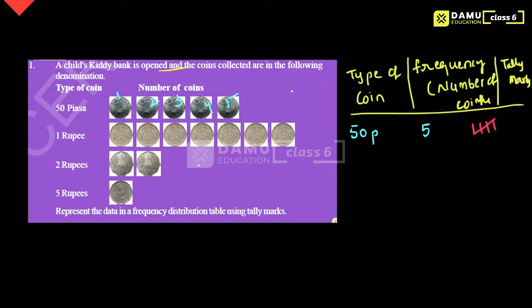Then next one: 1 rupee. How many tally marks are we going to write for 1 rupee? Counting through: 1, 2, 3, 4, 5, 6, 7. So we have 5 marks and then 2 more. For every group of 5, we strike through. What is the frequency here? It is 7.